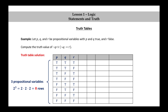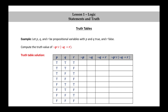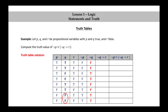We now need to label our other columns with the compound statements we need to build up our final compound statement: not P, not Q, not Q implies R, and finally the statement we're interested in — not P or (not Q implies R). We use the P column to fill out not P: the first four rows under P are T so the first four rows under not P are F, and the last four rows under P are F so the last four rows under not P are T. Similarly we fill out not Q by negating each value in the Q column.